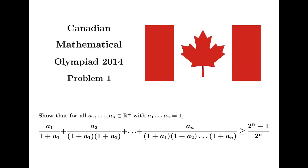Let's take a look at this problem, taken from the Canadian Mathematical Olympiad 2014. It says, show that for all positive real numbers a1, a2 up to an, with the product being 1,